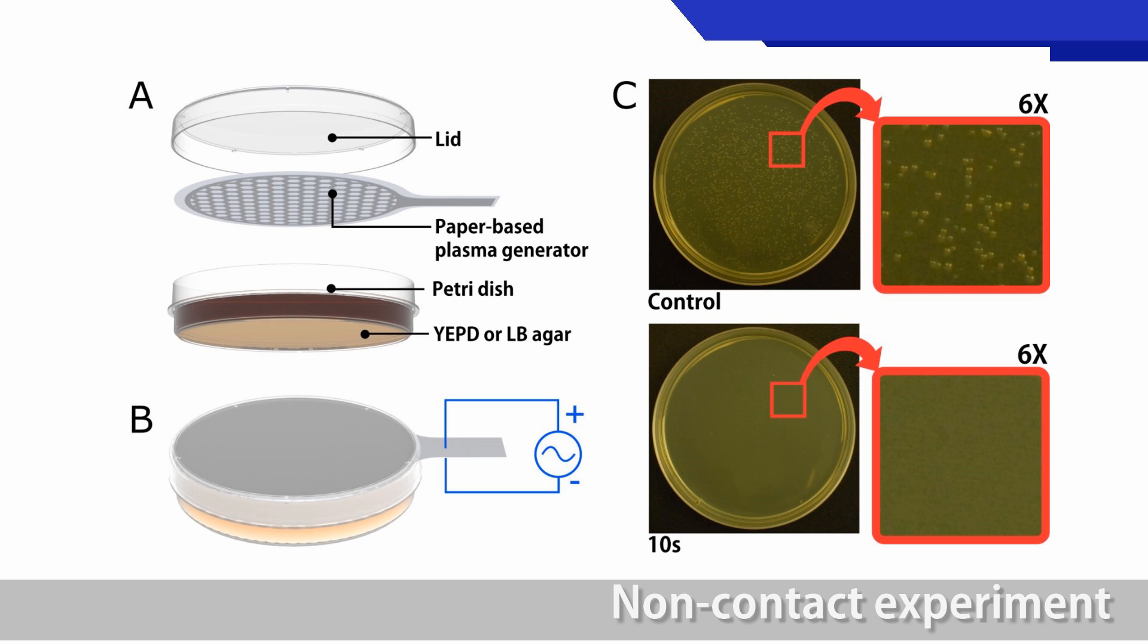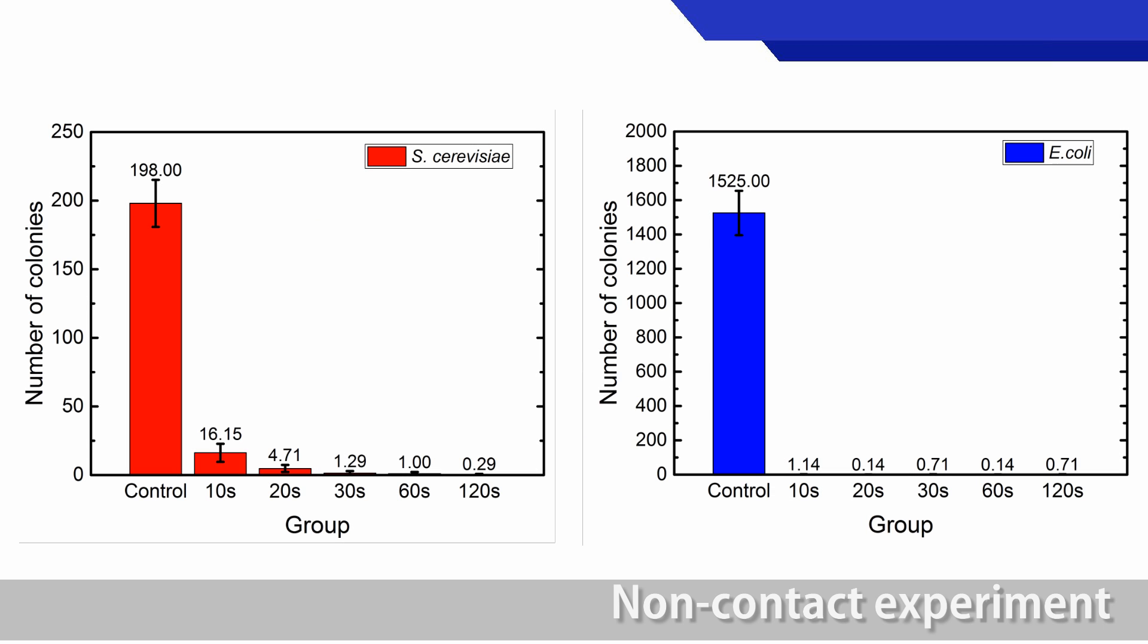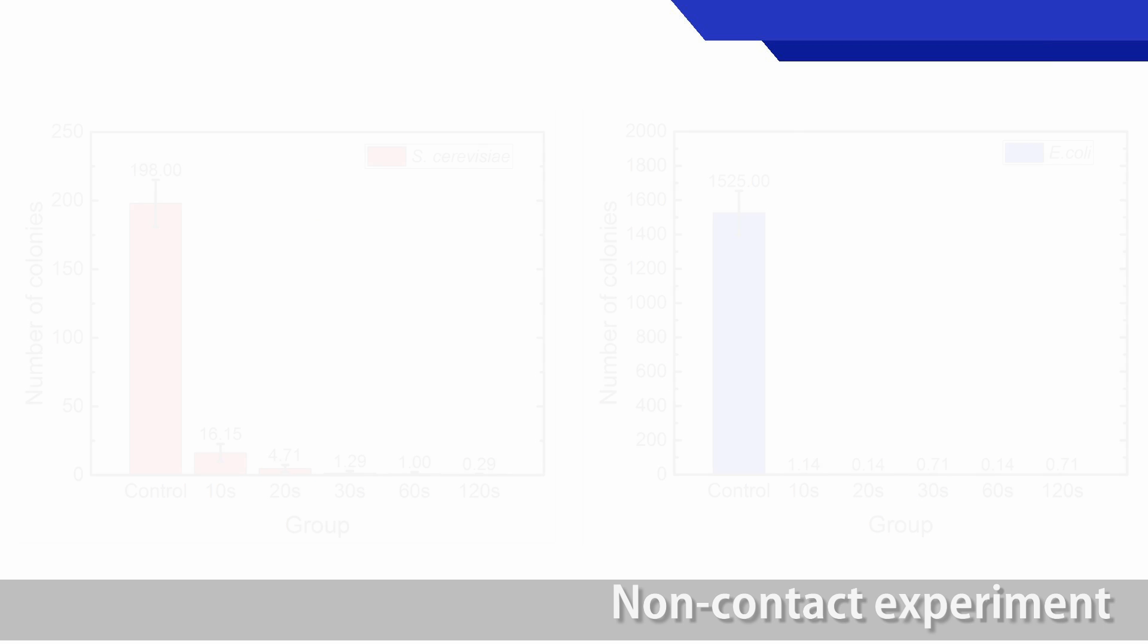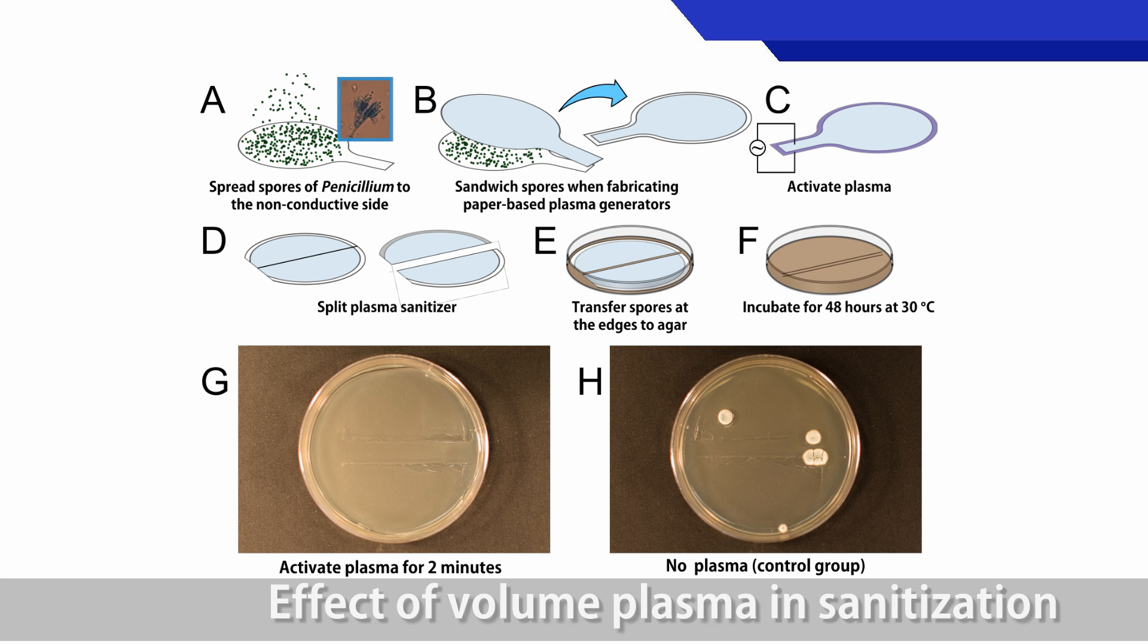The plasma sanitizers deactivated greater than 99% of yeast cells and greater than 99.9% of E. coli cells with 30 seconds of non-contact treatment.